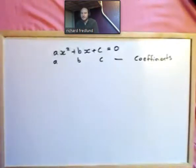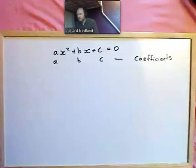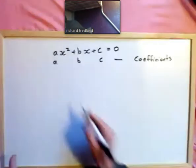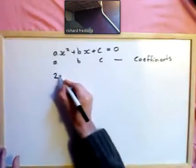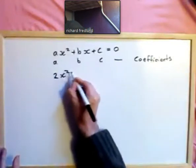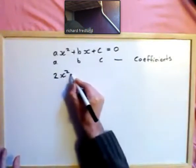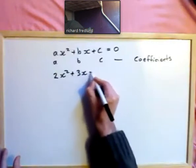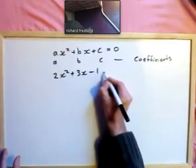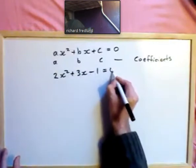When we say the coefficients, they can be any number we like. So let's make up a quadratic equation: 2x squared plus 3x minus 1 equals 0.